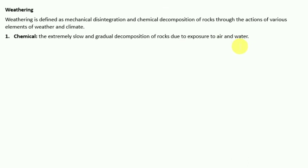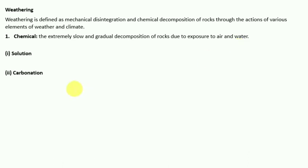The first chemical process is solution — the solubility of mineral into water or acid resulting in removal or disintegration of rock matter. CO₂ dissolves in water forming weak carbonic acid, which affects karst topography. The second chemical process is carbonation — a reaction of carbonate and bicarbonate with minerals, a common process helping the breakdown of feldspar and carbonate minerals.